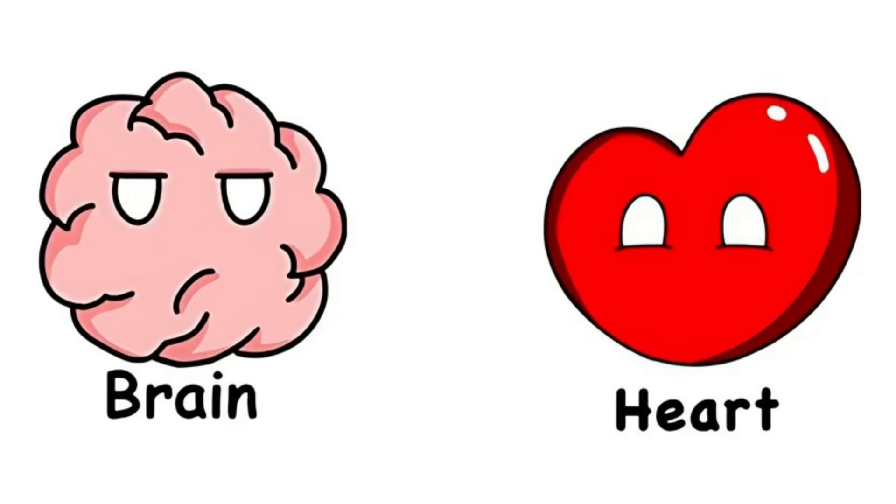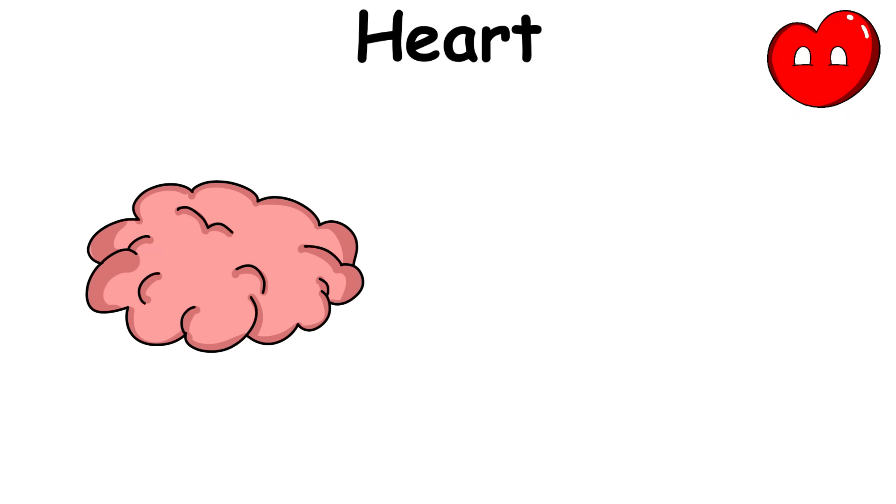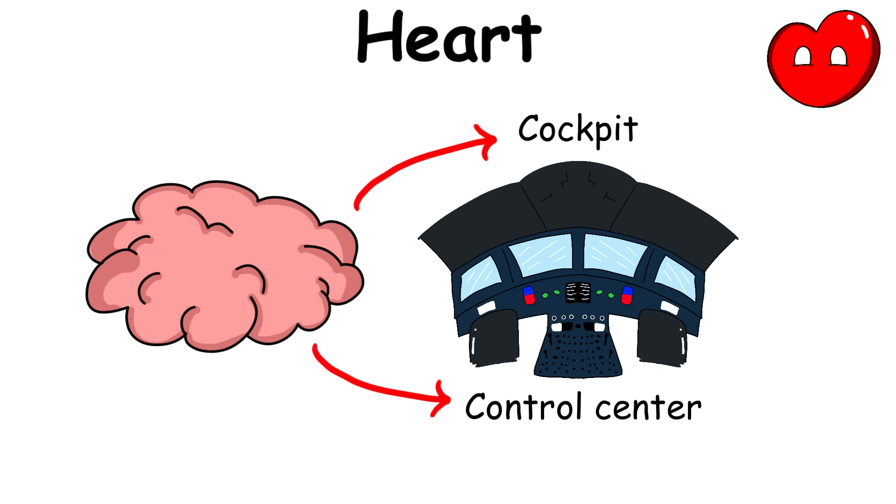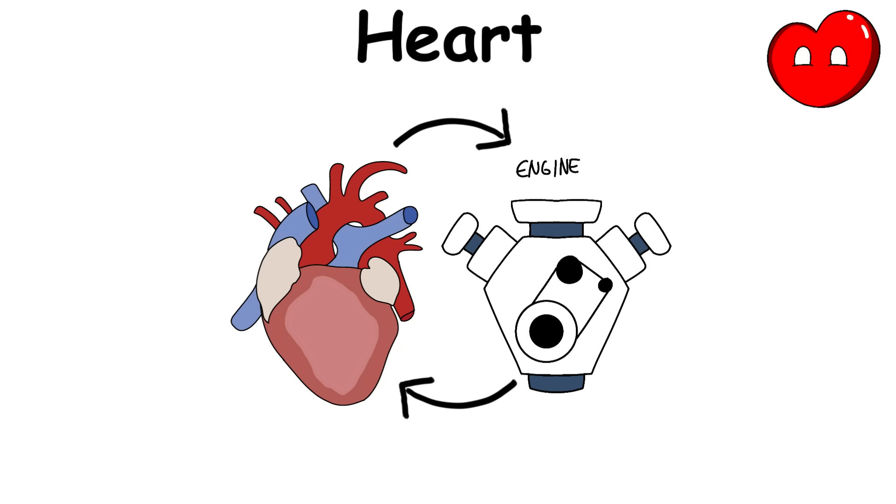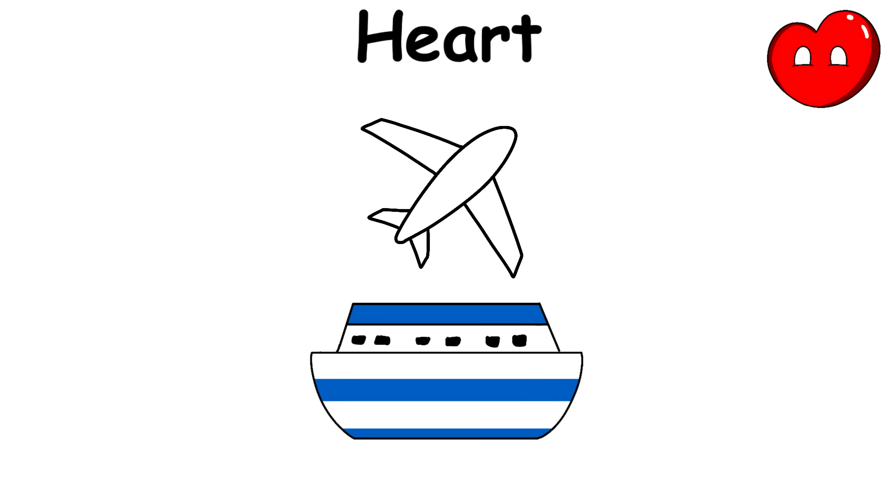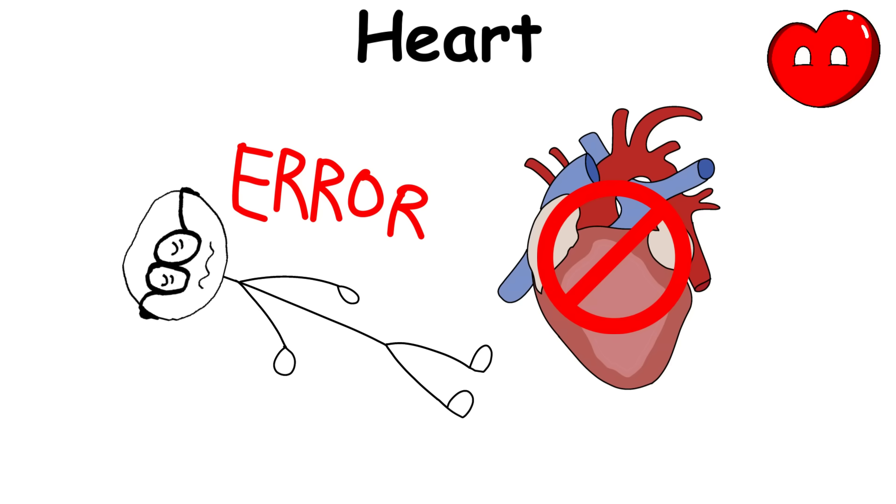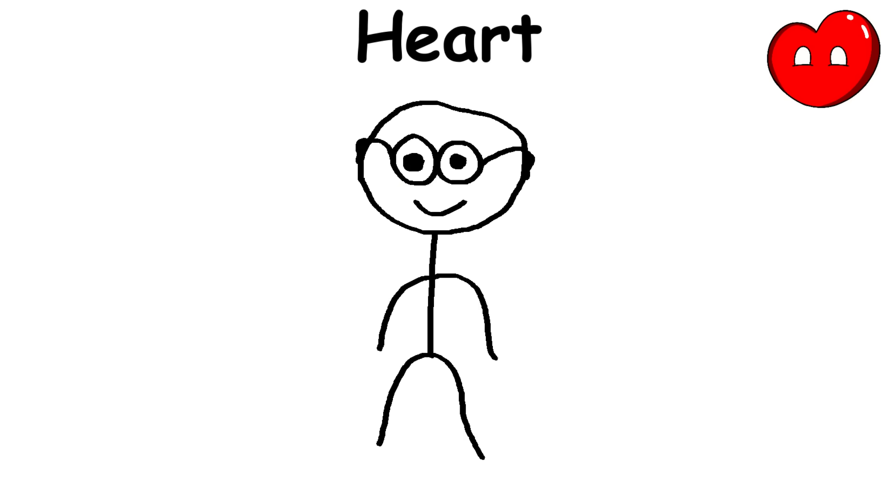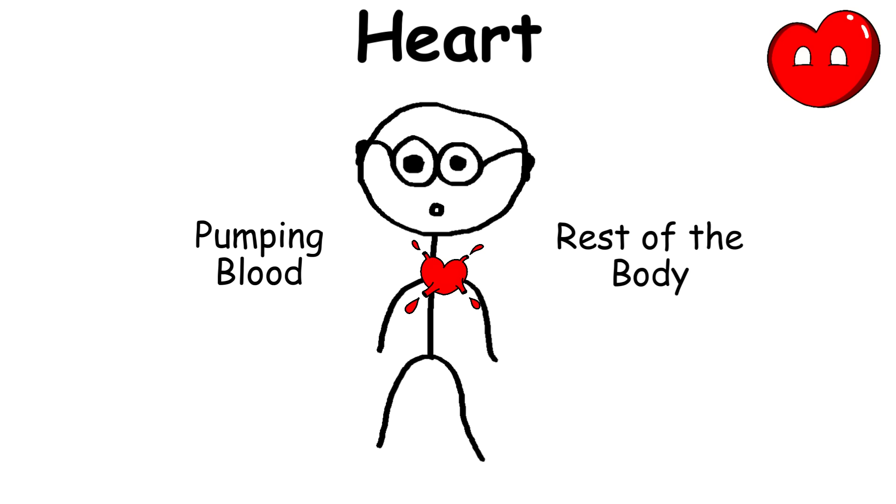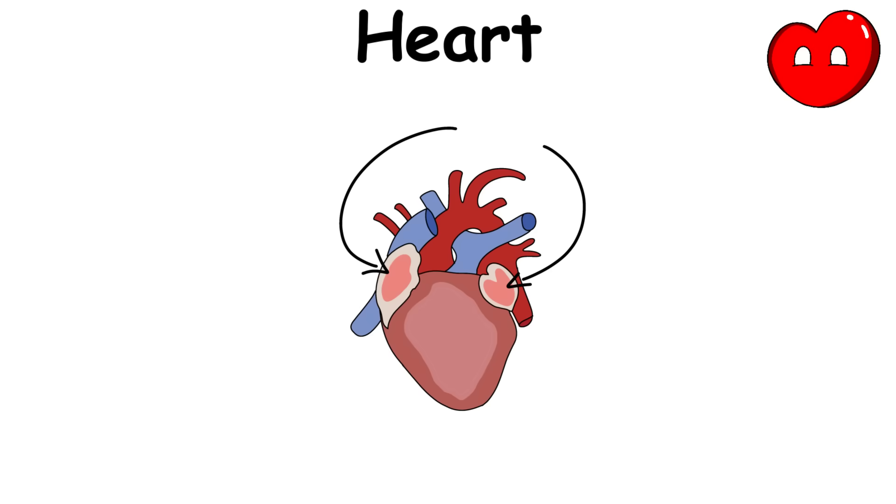If the brain is the body's cockpit or control center, the heart is the body's engine. Just like a ship or an airplane can't function without an engine, the body won't function correctly without a heart because it is responsible for pumping blood to the rest of the body. The heart comprises two upper chambers called atria and two lower chambers called ventricles.